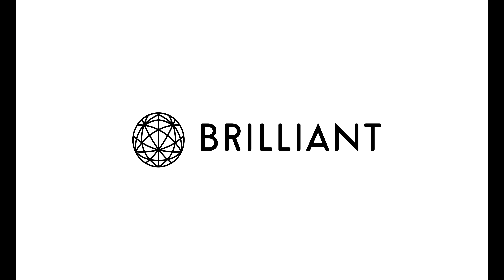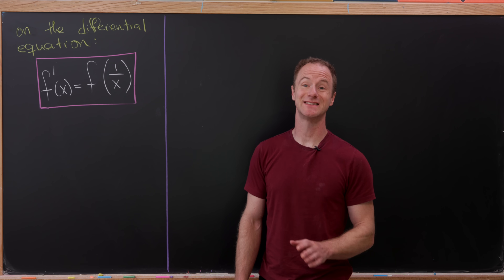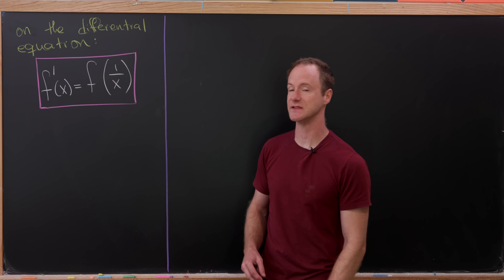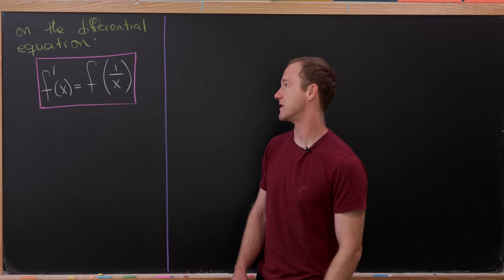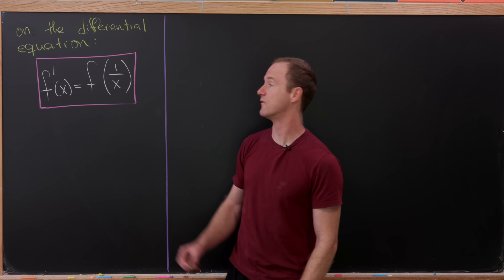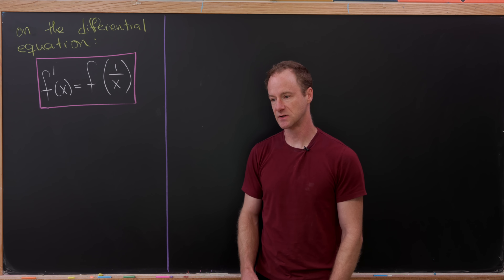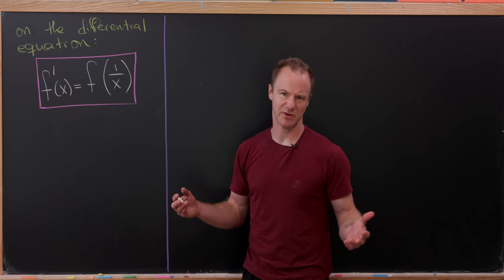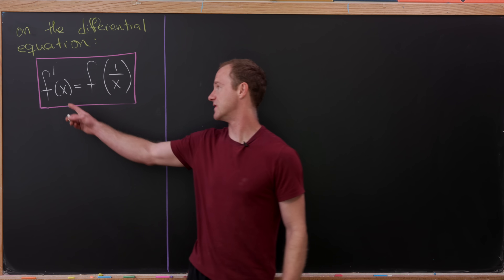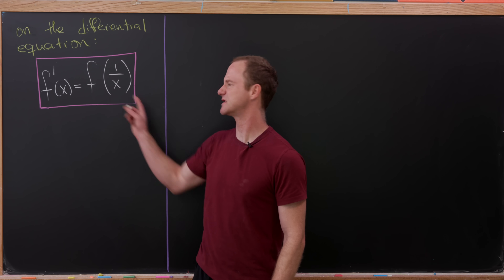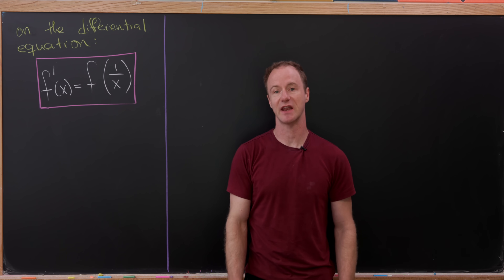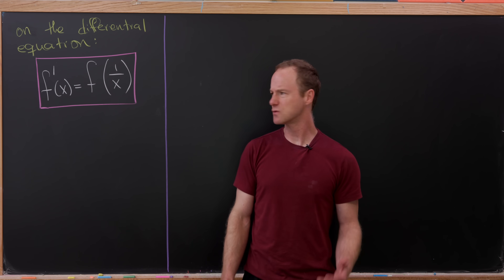Thanks to Brilliant for sponsoring today's video. There's nothing better than a really simply stated math problem that has a somewhat complicated solution — it's always a little bit surprising. And that's exactly what we have here. We're going to look at the differential equation f prime of x equals f of 1 over x. Not only is this easy to state, but it's got this nice combination of a differential equation and a compositional aspect — we're composing 1 over x into the function f.